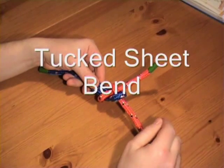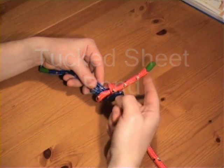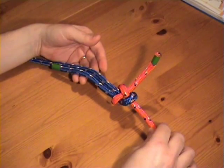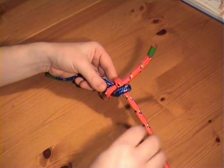You'll notice with a normal sheet bend that one of the pieces of rope sticks out and this could get snagged. We get around this by using the touch sheet bend.